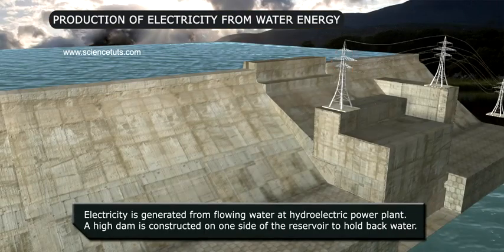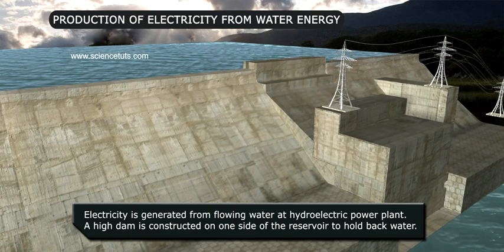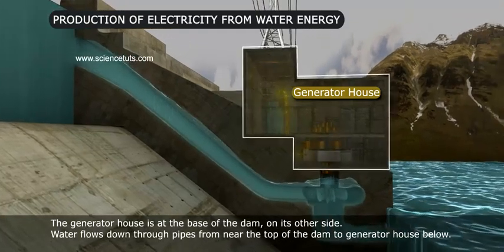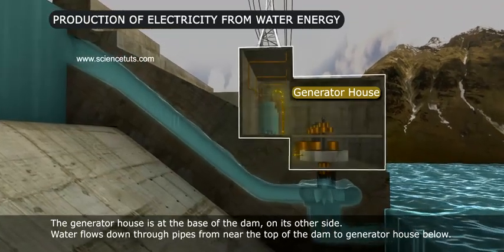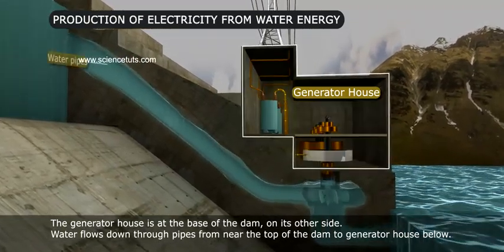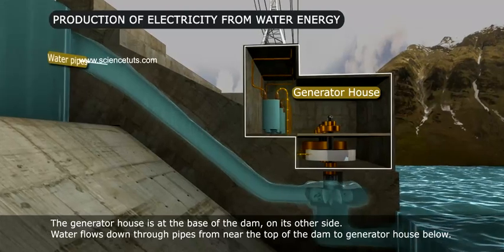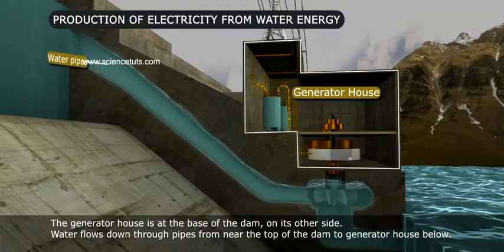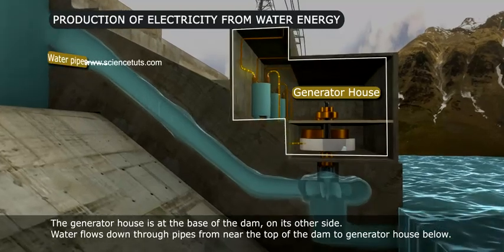Electricity is generated from flowing water at a hydroelectric power plant. A high dam is constructed on one side of the reservoir to hold back the water. The generator house is at the base of the dam on its other side. Water flows down through pipes from near the top of the dam to the generator house below.